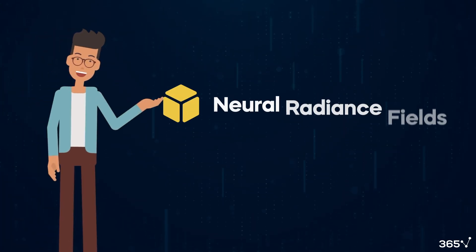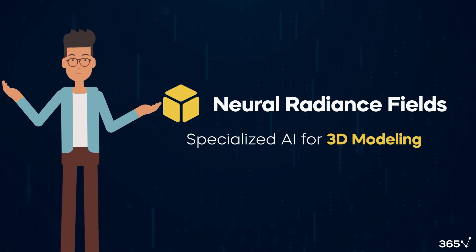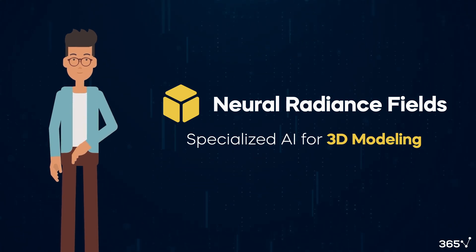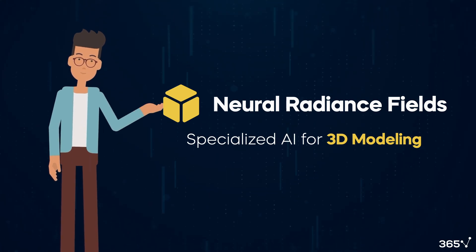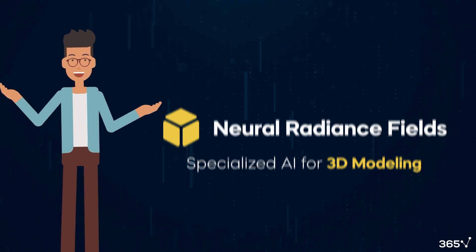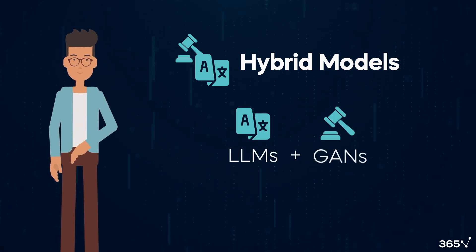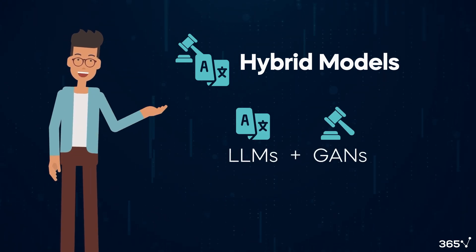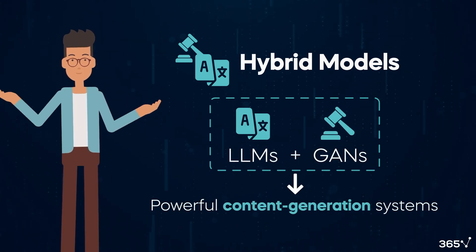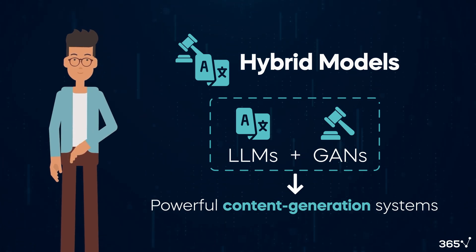Neural Radiance Fields is a specialized AI for 3D modeling, which emerged around 2020. And lastly, the increasingly popular hybrid approach combines LLMs and GANs into one powerful content generation system.